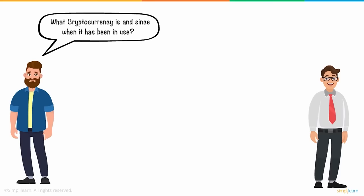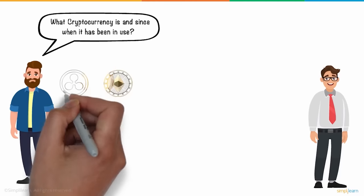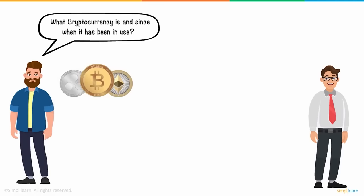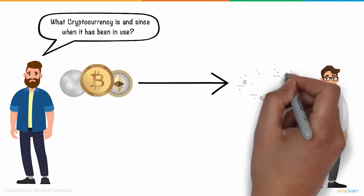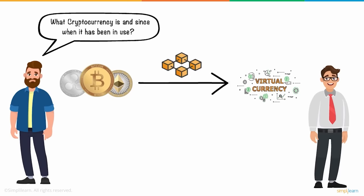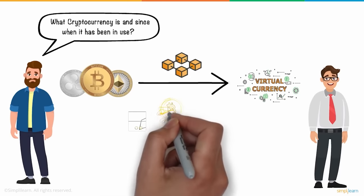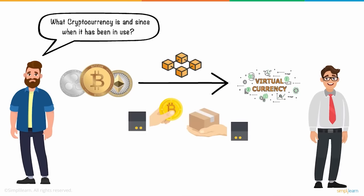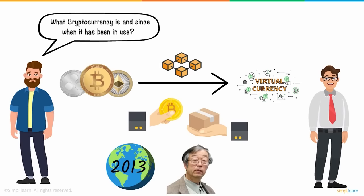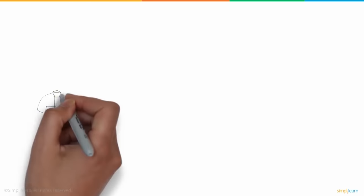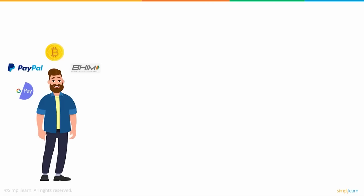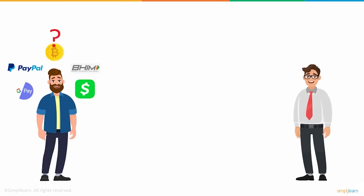Frank's response was simple: 'I used Bitcoin, a type of cryptocurrency.' Daniel was confused and asked what cryptocurrency is and since when it has been in use. Frank explained that cryptocurrency is a virtual or digital currency that works on blockchain technology and is designed to work as a medium of exchange online — to buy goods, services, and make payments — first introduced to the world in 2013 by Satoshi Nakamoto.